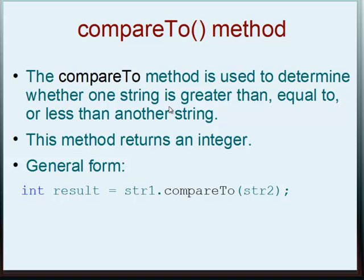The compareTo method is used to determine whether one string is greater than, equal to, or less than another string. This method returns an integer. The general form is described here: int result equals string1.compareTo(string2).